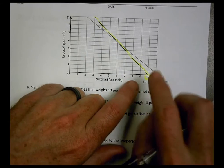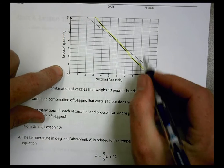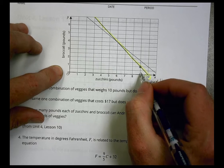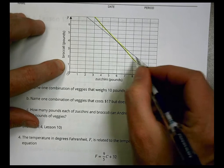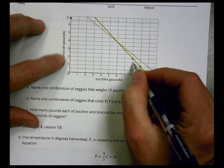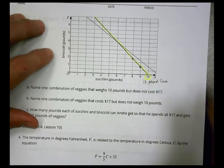If I have 10 pounds of zucchini, I can have zero broccoli to have 10 pounds. If I have nine pounds of zucchini, I would have one pound of broccoli. Every time I find a point here, eight and two, they add up to be a total of 10 pounds. That's my 10-pound line.